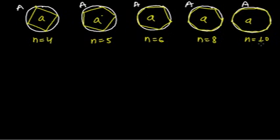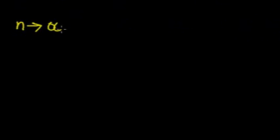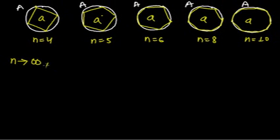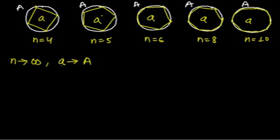Let's assume: if N, the number of sides, approaches to infinity — infinity means a huge number that we cannot even imagine, it is too huge — if the number of sides is infinity, then of course this will almost cover the whole circle. The area of the polygon will be almost equal to the area of the whole circle. As the number of sides approaches to infinity, the area of the polygon also approaches to the area of the circle. In such cases, to calculate the area of the polygon when the number of sides is infinity, we actually introduce a new topic in mathematics — that is called limit.